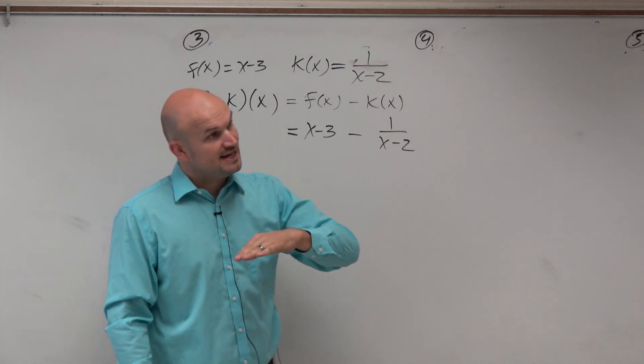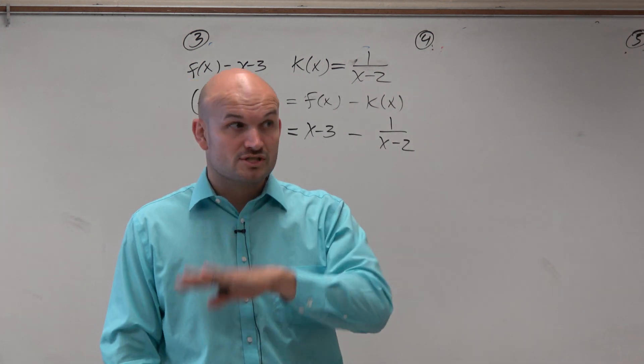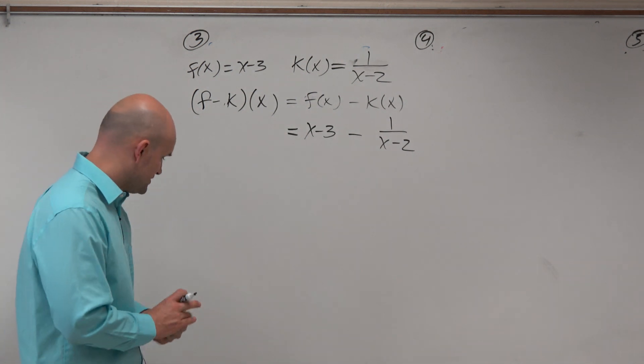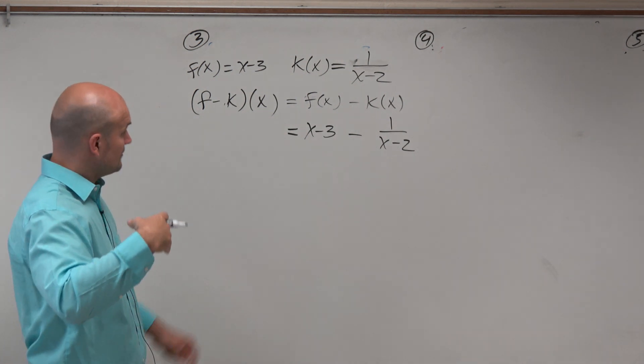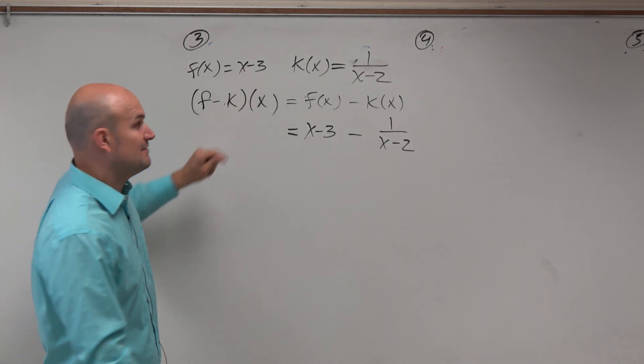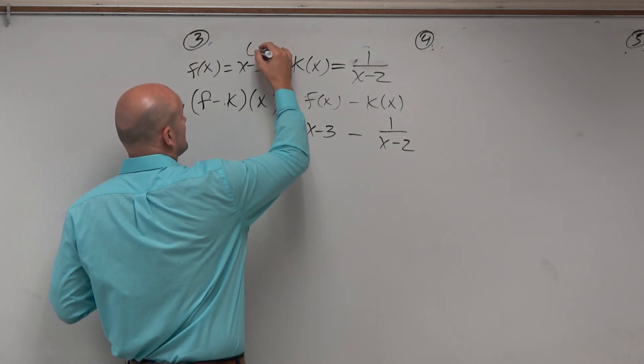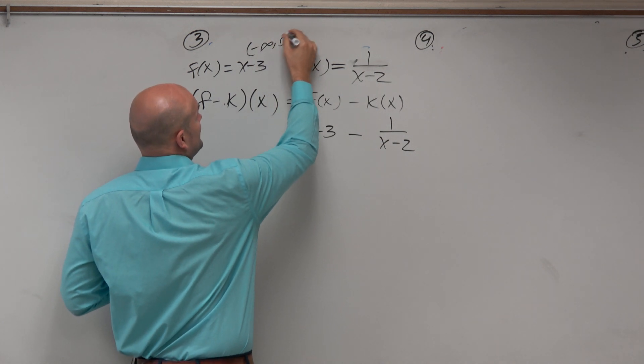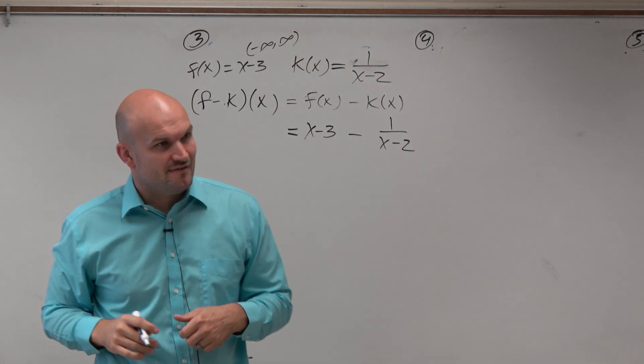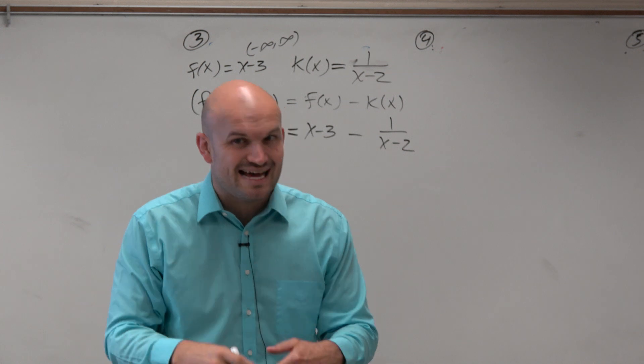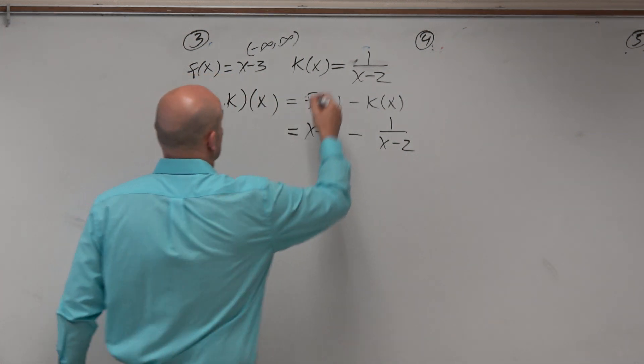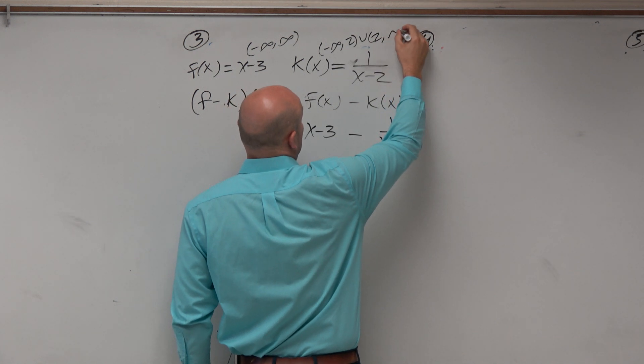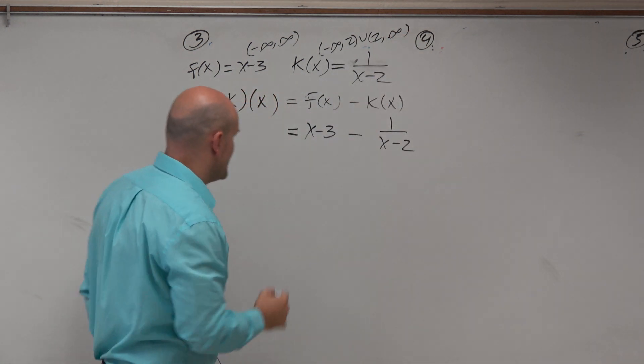The next thing is identifying the domain. We're subtracting, so the domain is the intersection of our two functions. So x minus 3, the domain of that is all real numbers, right? Negative infinity to infinity. The domain of k of x is going to be all real numbers except 2. So I am hoping that this idea of writing the domain is getting rather simple for you.